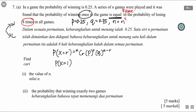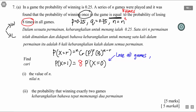What I mean is: the probability of winning once equals eight times the probability of losing all the games. The probability of losing all the games means winning zero times. So I write P(win = 0) in all games. The win count for that side is zero, and the win count for the left side is one.